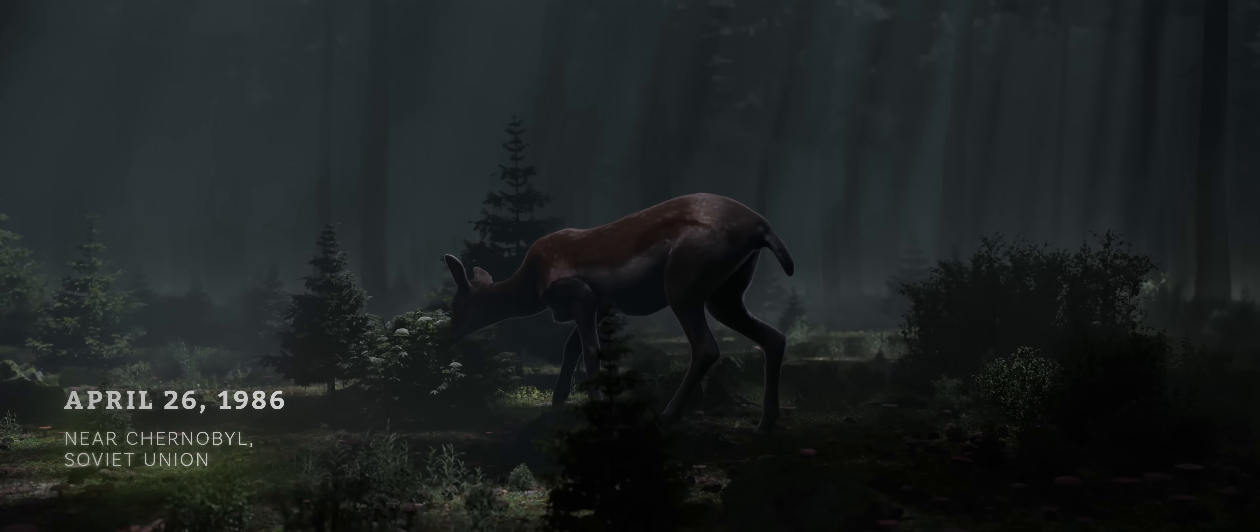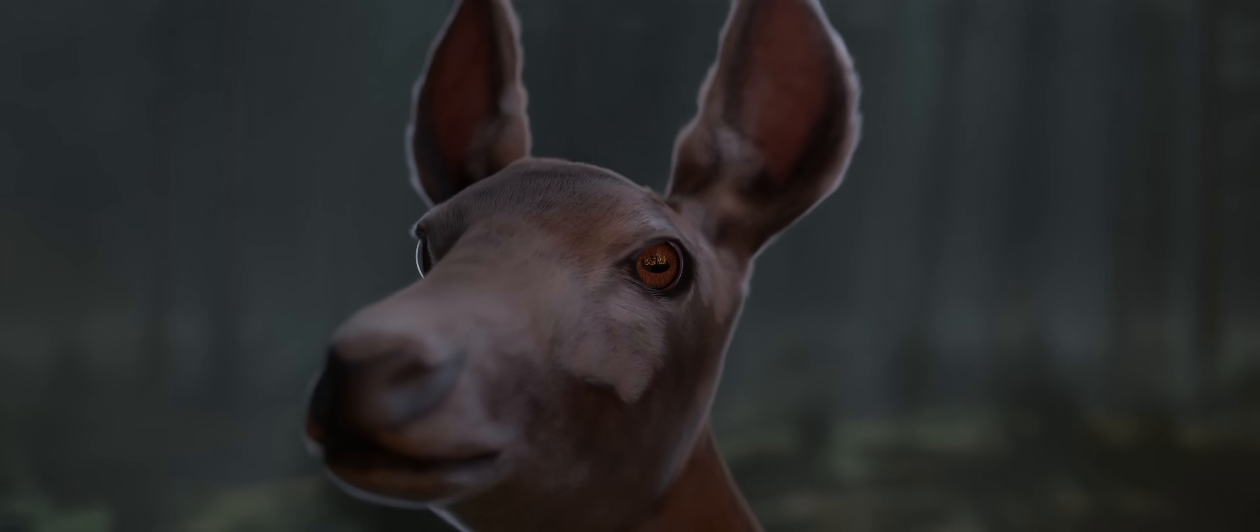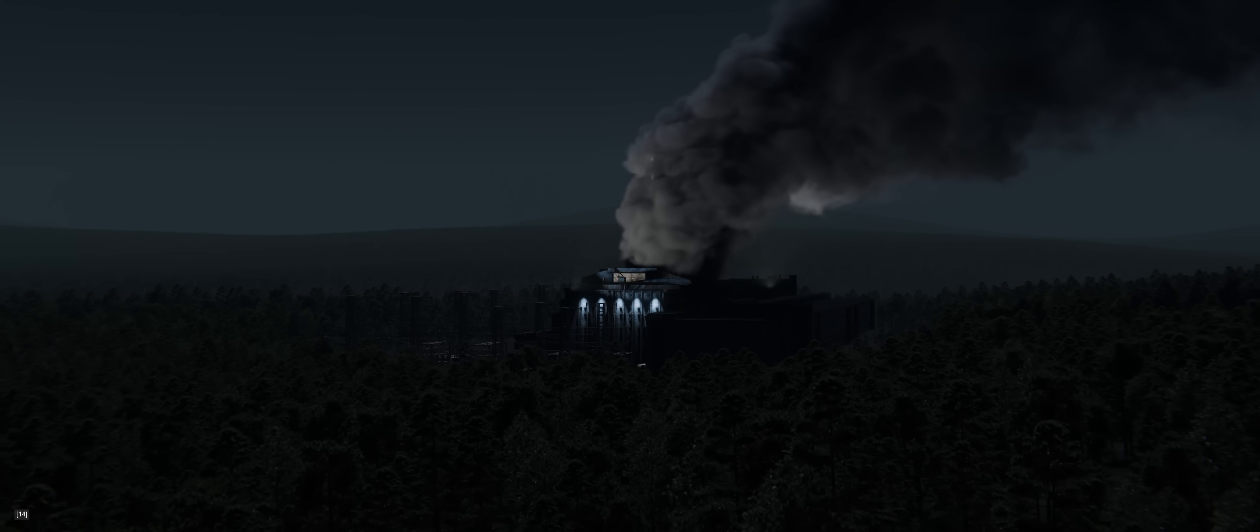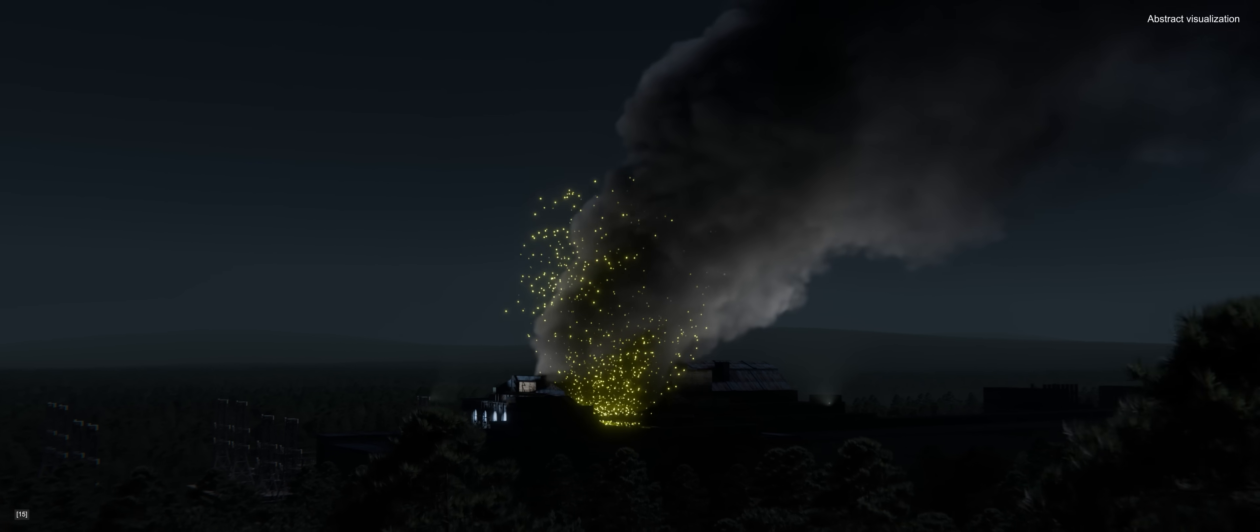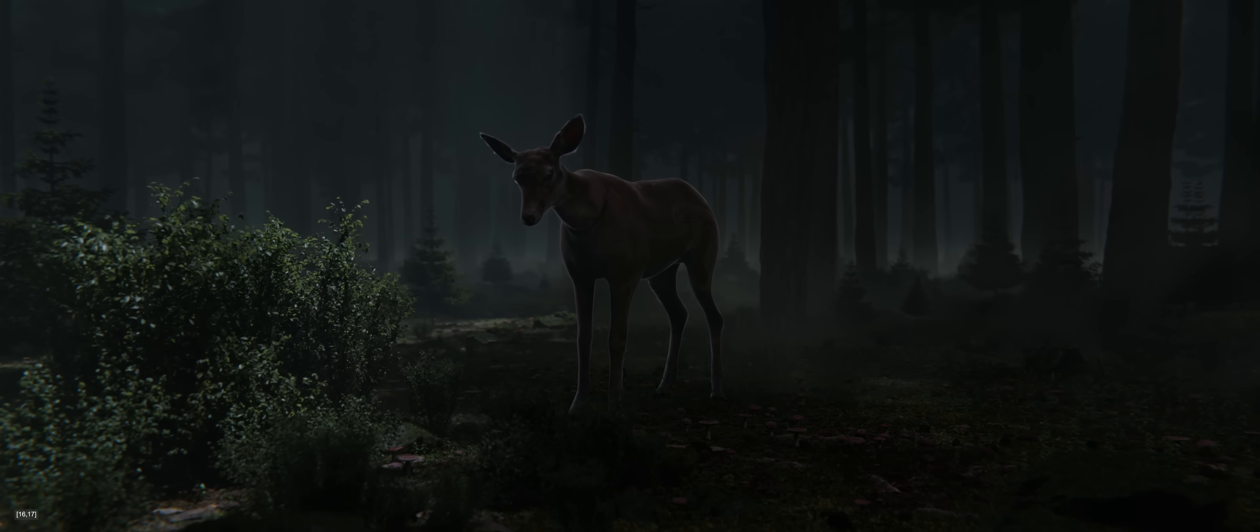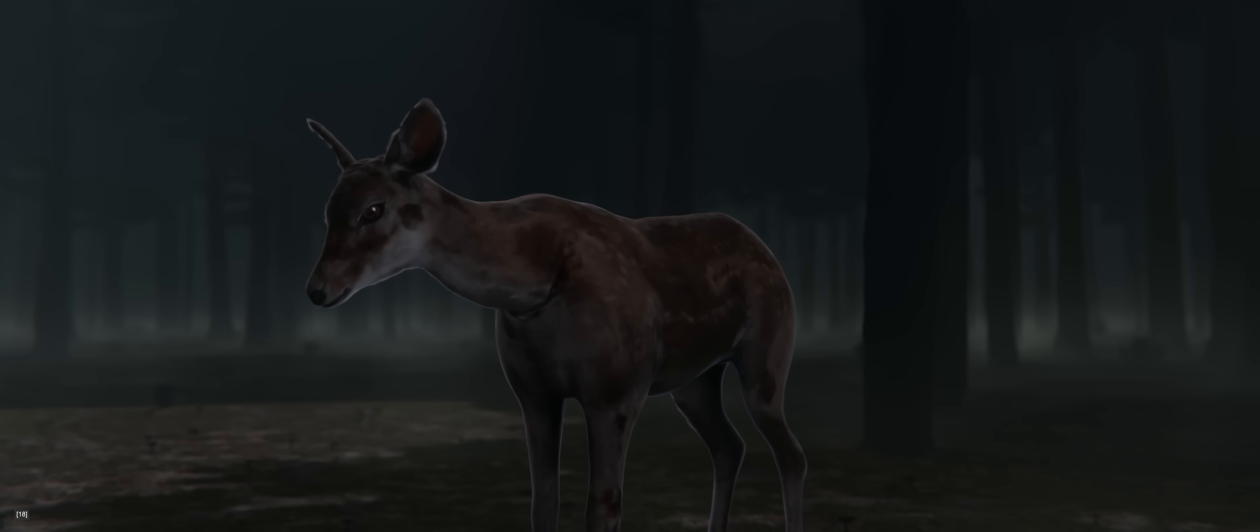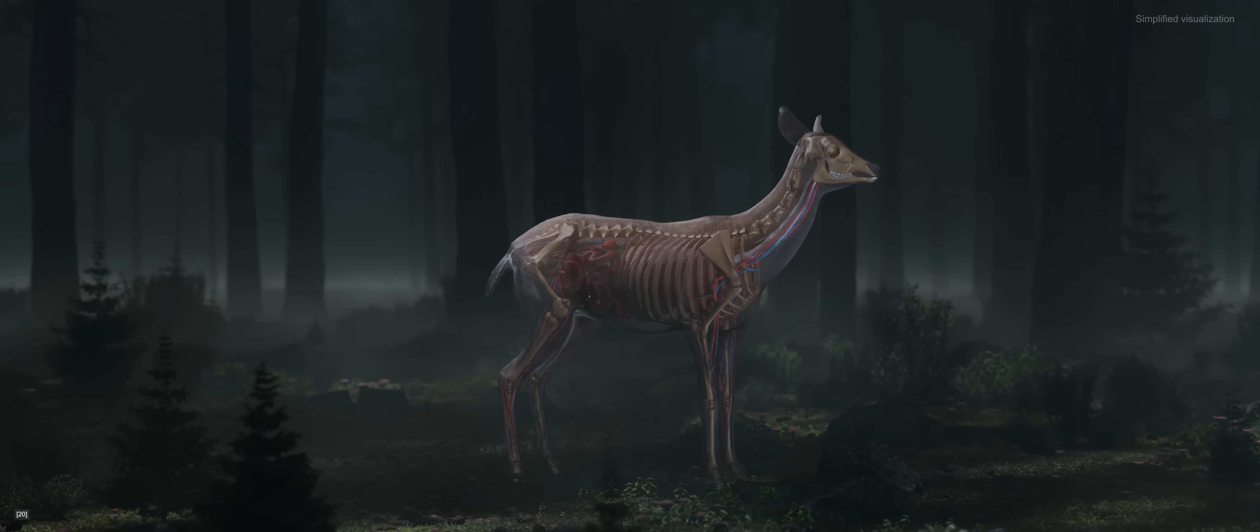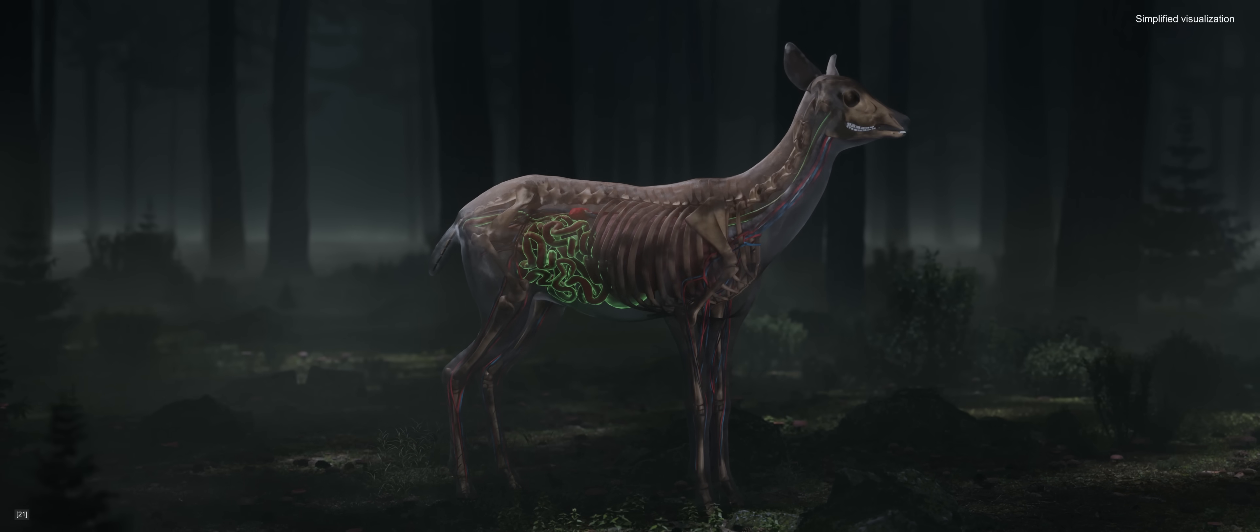Spring 1986, in the dead of the night. Reactor 4 at the Chernobyl nuclear power plant has just exploded. Massive amounts of highly radioactive material like iodine and cesium are hurled into the air. The radiation seeps into the cells of all living things in the area, including this deer. 30 minutes after the blast, it's dizzy and barely able to stay on its feet.